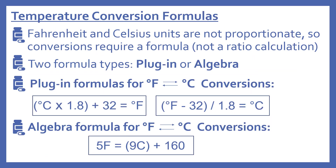Now we'll talk about the temperature conversion formulas. Fahrenheit and Celsius units are not proportionate, so conversions require a formula — you can't just do a ratio calculation with these because their units are not proportionate. There are two formula types: plug-in formulas or an algebra formula. The best thing to do is choose the formula that's easiest for you, because these formulas have to be memorized.